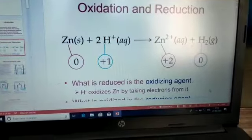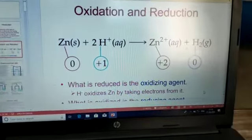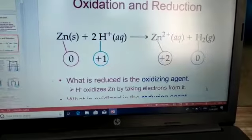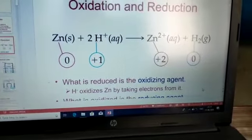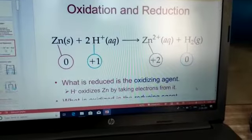To agar main sirf simple baat karun, ki yahan par oxidizing agent kya hai, which is reduced is the oxidizing agent, to that is hydrogen, oxidizes zinc by taking electrons, to yahan par hydrogen jo hai, wo oxidizing agent hai.